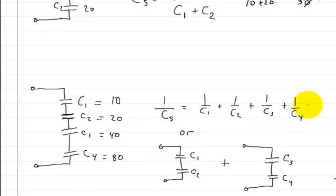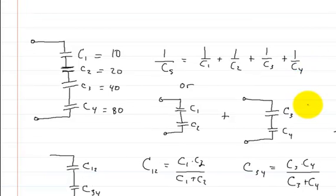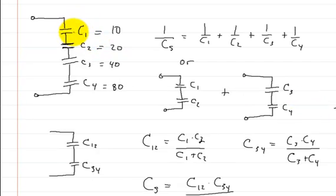Now what happens if you have a circuit like this? It's a lot messier. And we have four capacitors in it. So C1 is equal to 10 farads. These all have farads on them. I just didn't write it down. So that's 10 farads, 20 farads, 40 farads, and 80 farads.